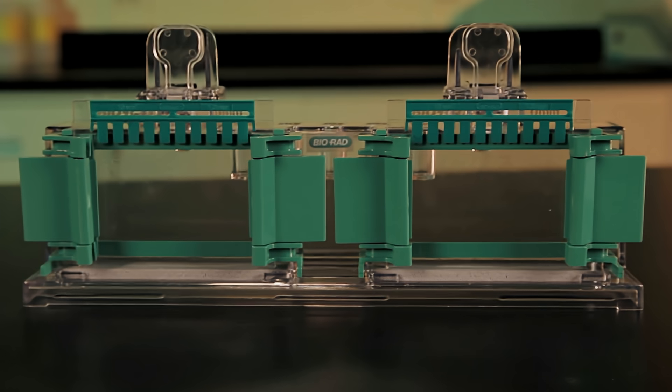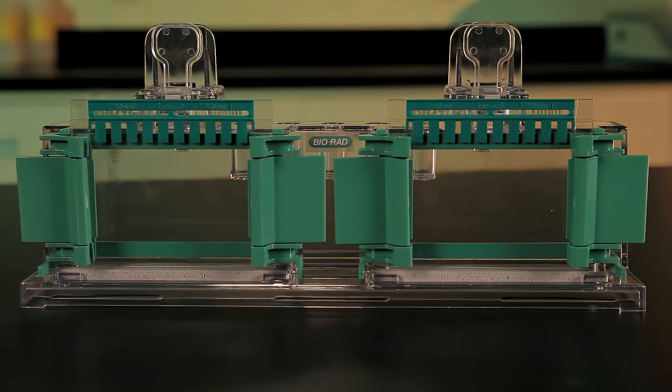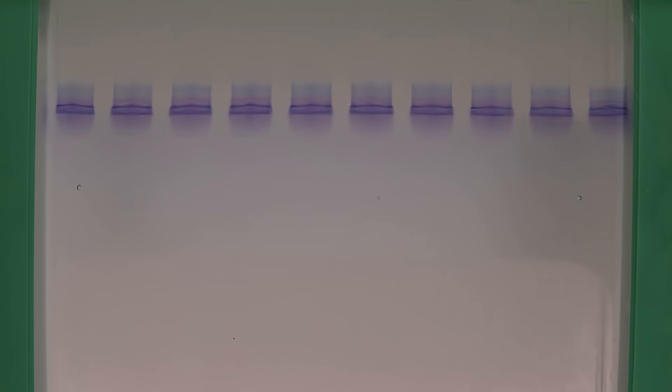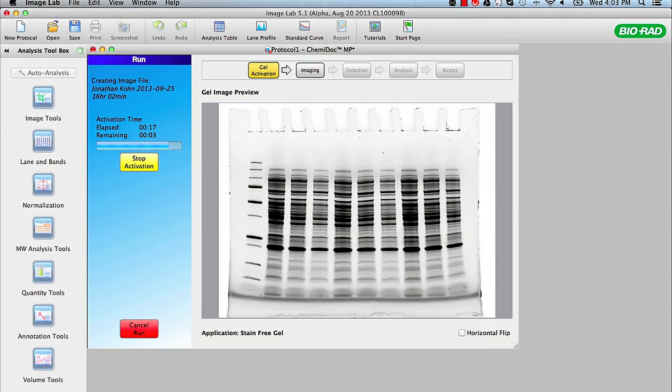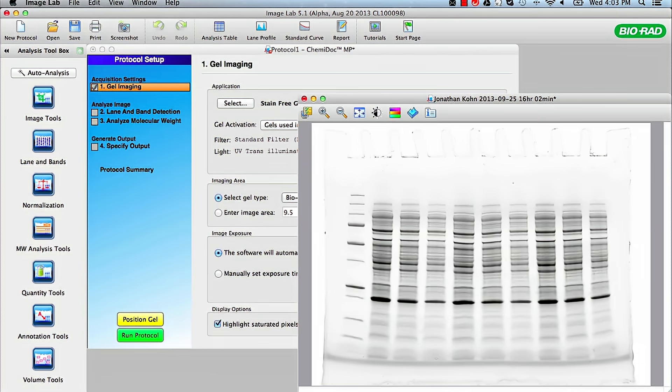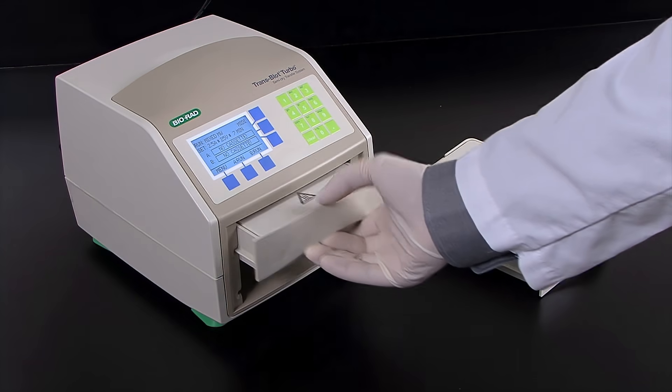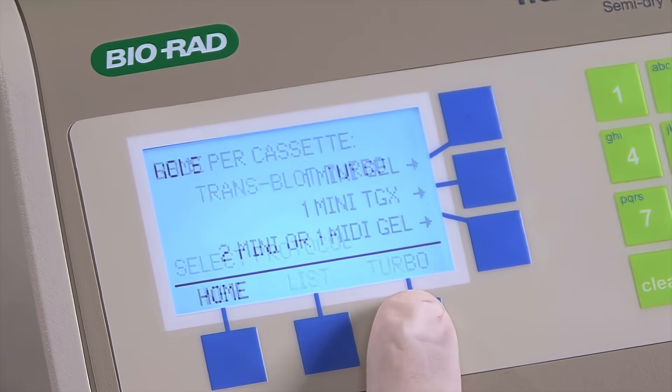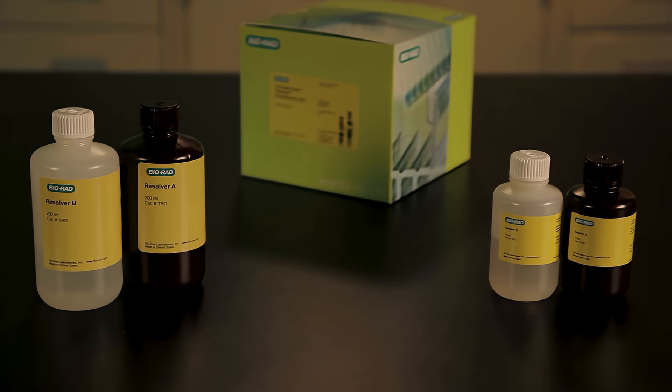You are now ready to run your Bio-Rad TGX FastCast gels. FastCast gels can be run in as little as 20 minutes and can be visualized in less than 5 minutes without staining using stain-free technology, and can be transferred in 3-7 minutes using the TransBlot Turbo. FastCast kits provide unparalleled convenience and performance.